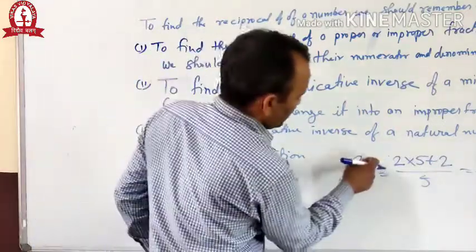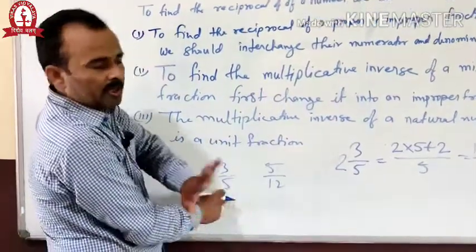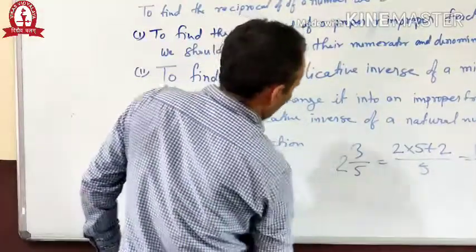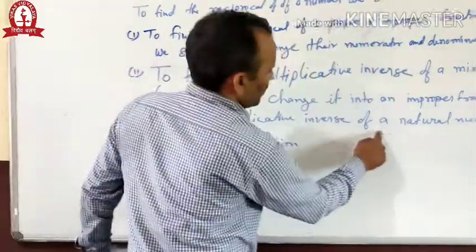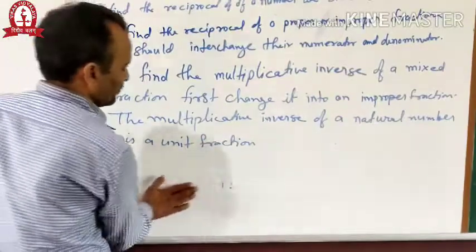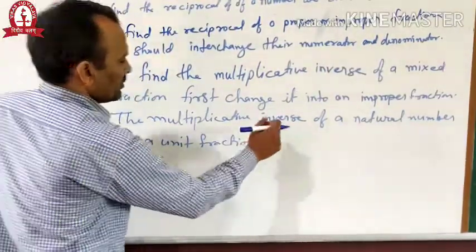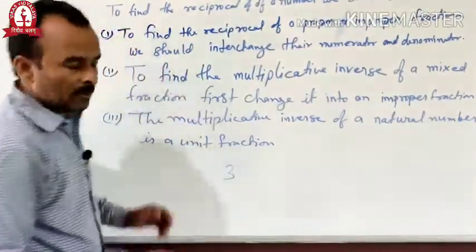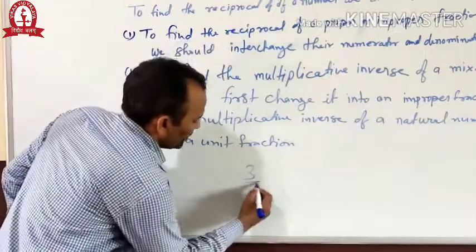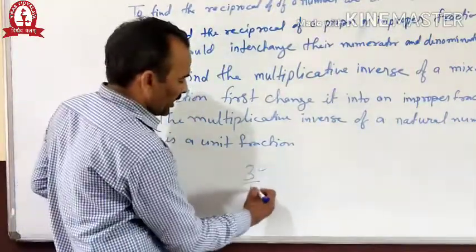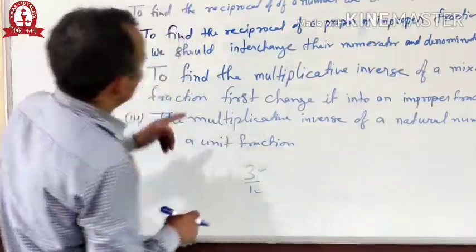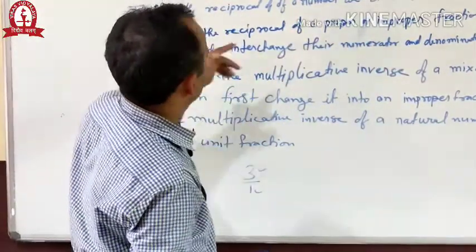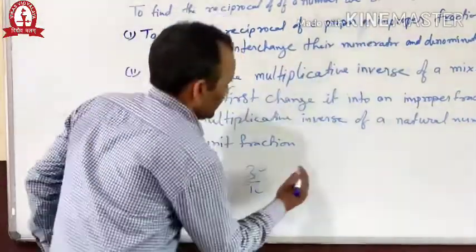Here, first we change the mixed fraction into an improper fraction, then interchange the numerator and denominator. Second, the multiplicative inverse of a natural number is a unit fraction. For example, if you have the number 3, the multiplicative inverse of 3 — since 3 means 3 by 1, where 3 is the numerator and 1 is the denominator — after interchanging, it becomes 1 by 3.